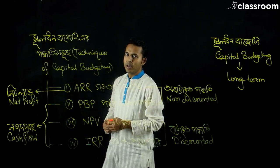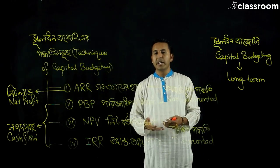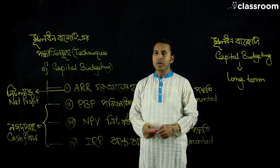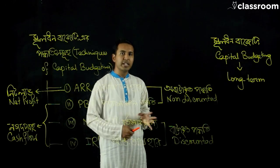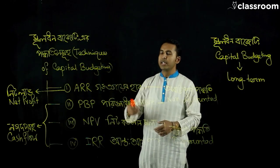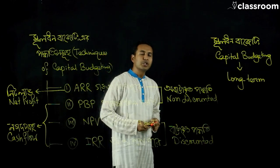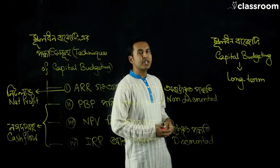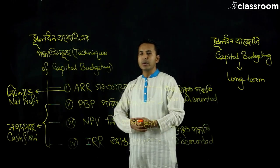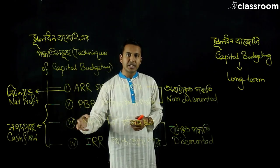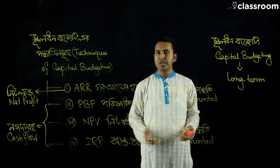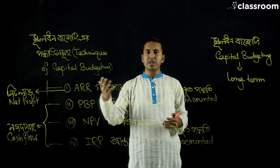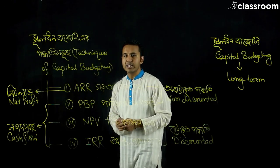ARR uses net profit in its calculation, while the other three methods — Payback Period, NPV, and IRR — use cash flow. This is an important distinction. In the next class, we will go through the detailed calculation for each of these techniques, including how to handle net profit and cash flow figures in tabular form.